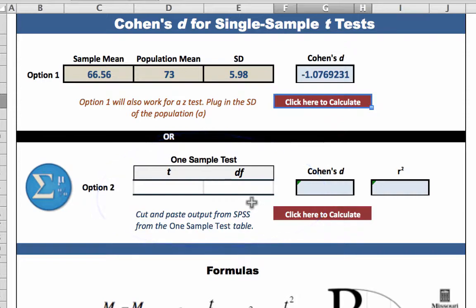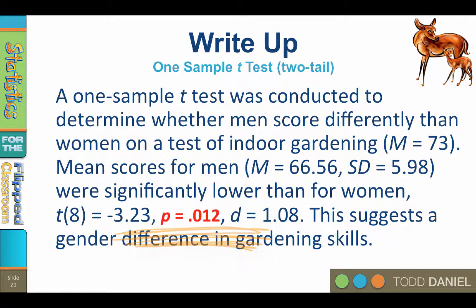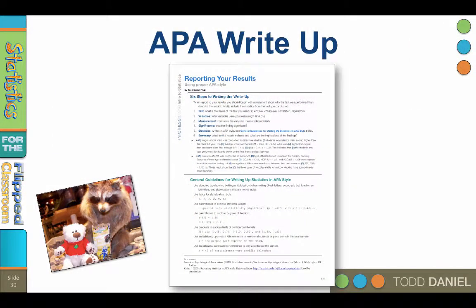With the new probability and effect size, you could write up your results substituting p equals .012 where you previously had p less than .05. Finally, for more details about reporting your results, see page 11 in the Bayer handout.